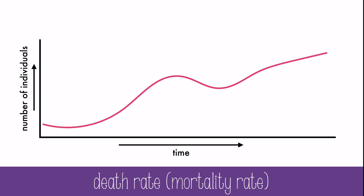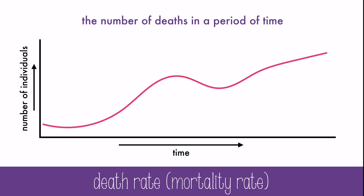Death rate, or mortality rate, is the number of deaths in a period of time. In this diagram, the death rate is dropping, but what does that actually mean? That means that fewer people are dying as time goes on. This also means that the population will likely increase.